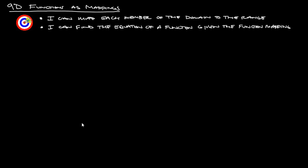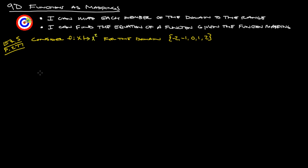Alright, so let's jump straight into it and look at example 5 from page 277. Consider the function f such that x is converted into x squared for the domain negative 2, negative 1, 0, 1, and 2. What they're asking us to do is figure out what these are going to map to — meaning if you plug in x, what are you going to get for your y? So we have f of x equals x squared, and we're going to plug each one of these in and see what we get.